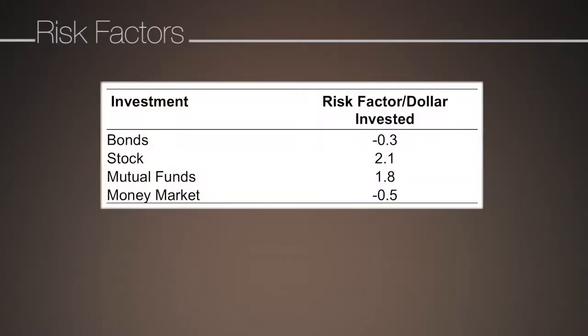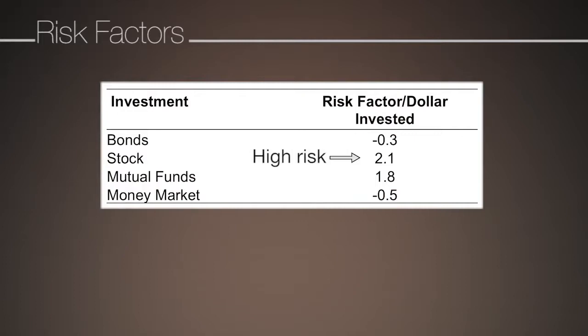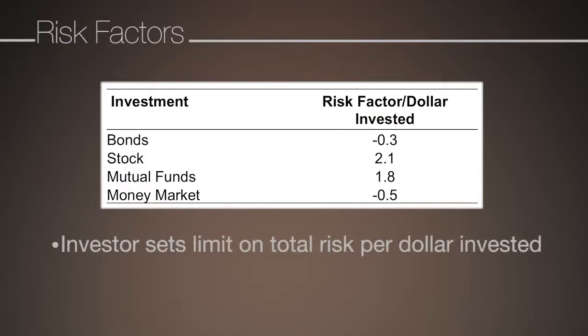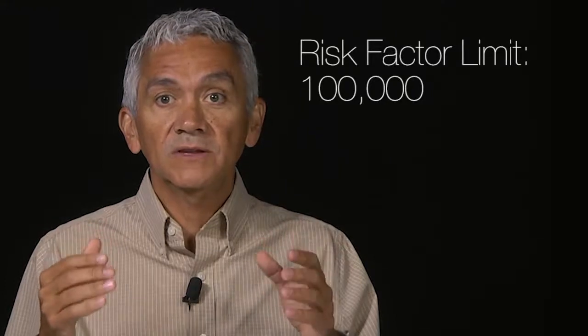In addition, the investor must deal with other risks such as changes in the economy or major global events. One way to account for such uncertainty is to consider risk factors for each asset as shown in this table. Negative values represent low risk and values greater than 1 represent high risk. The investor specifies a limit on the total amount of risk per dollar invested. Let's assume that in the case of our investor, she has set a risk factor limit of $100,000.